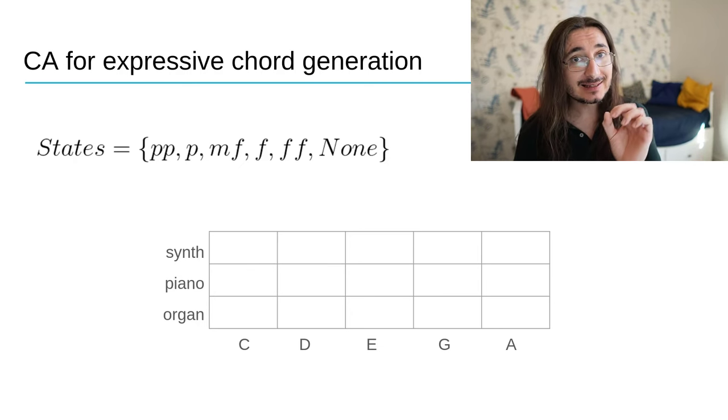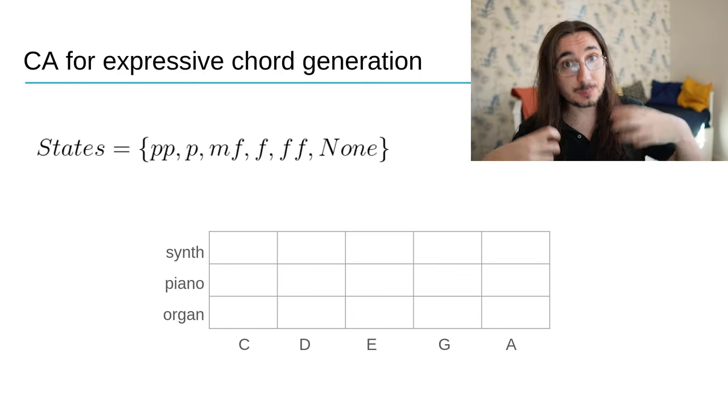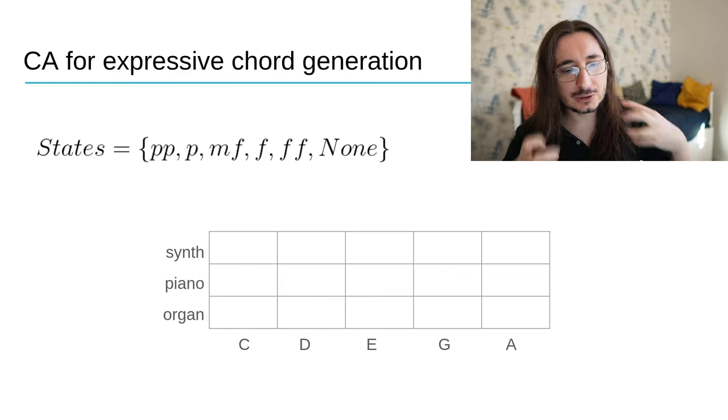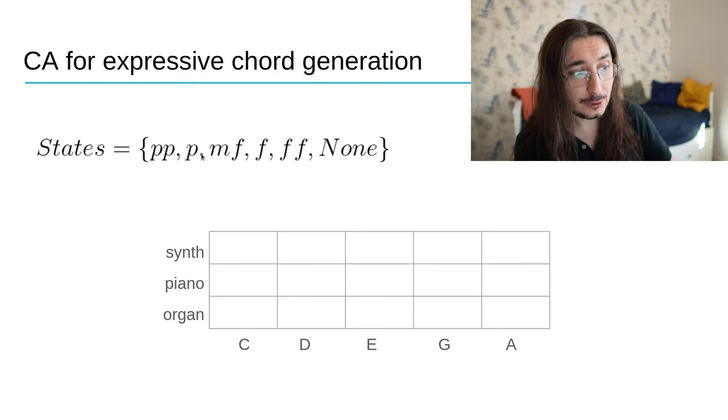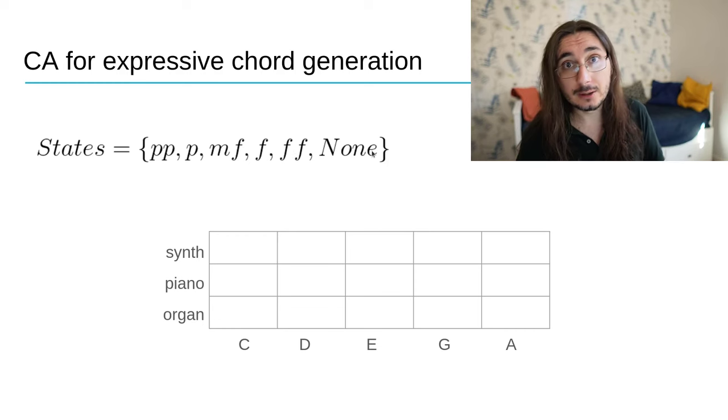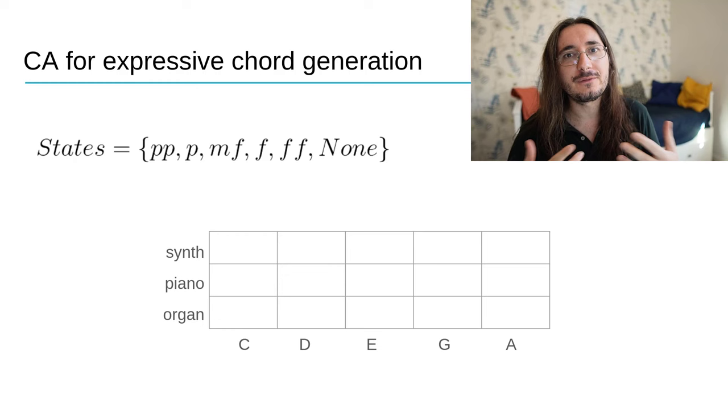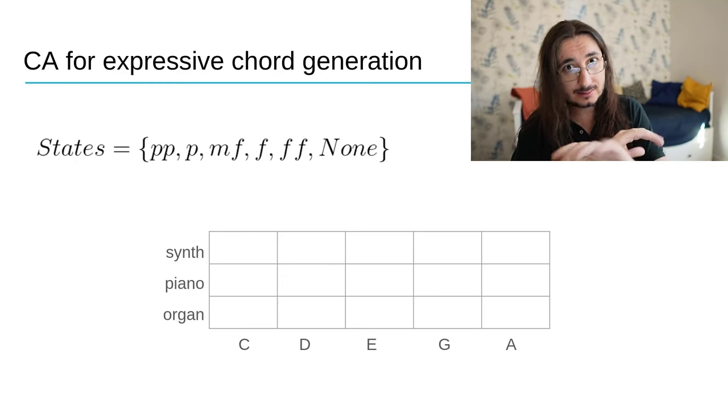Then we have states. States are the different dynamics, expressive dynamics that we want our chords, the notes that make up our chords to get. We start with pianissimo. We have piano, mezzo forte, forte, fortissimo, and none. None, once again, you guessed it, is a way for us to say, yeah, here we don't have any activity. It's a rest. It's silence.